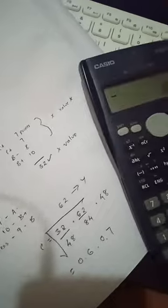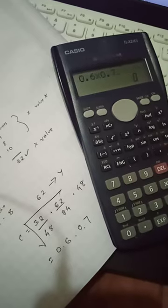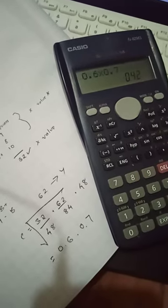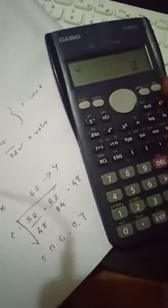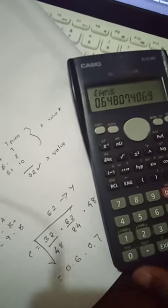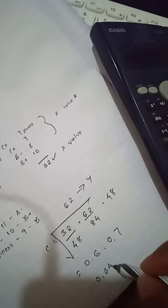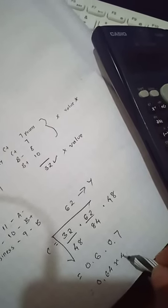Then you multiply 0.6 times 0.7, that's 0.42. Then you find the root of 0.42, so it's 0.64, multiply by 48.